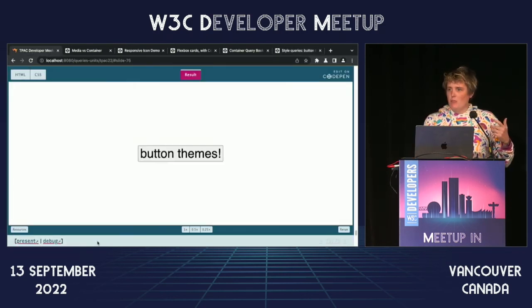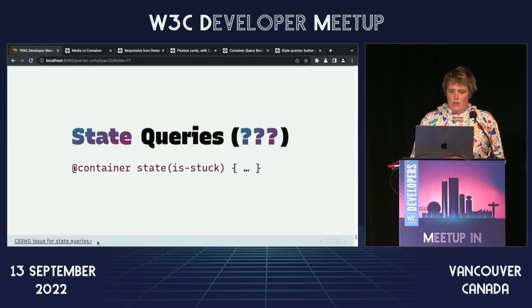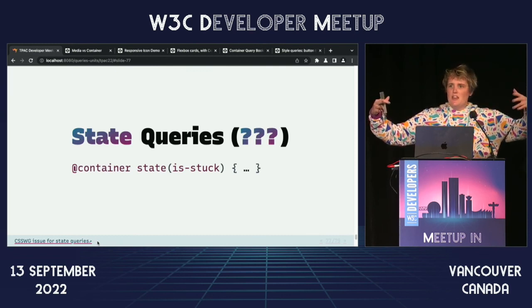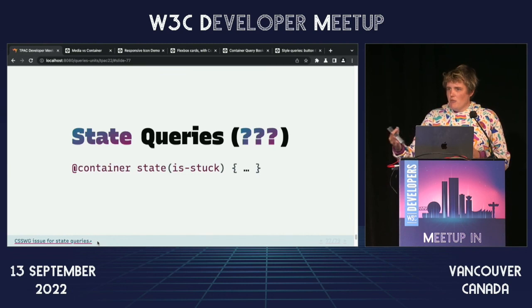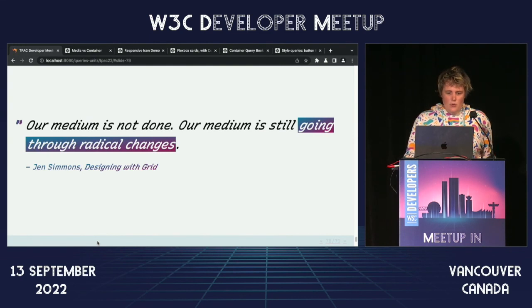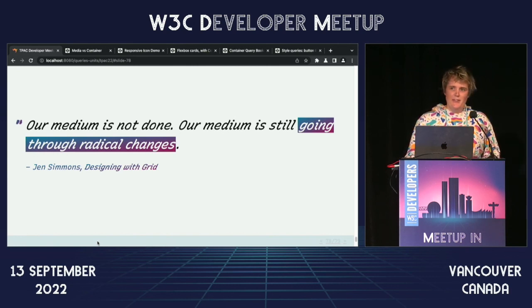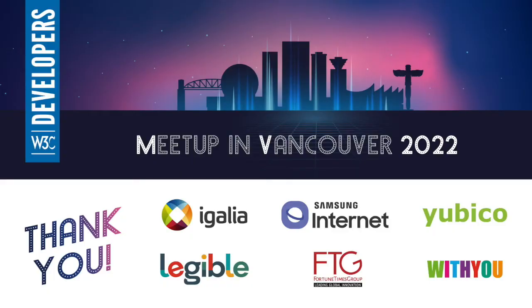We would love to see more use cases for style queries and get those shipped everywhere. We think there are probably other questions we can ask of containers — we're looking at state queries. Could we query whether a container is position sticky and currently stuck? We haven't specced it yet, but we think there might be more opportunities for asking questions of containers. If you have ideas, there's a link in the slides to the issue. Our medium is not done — our medium is still going through radical changes, and that's why we're all here. Thank you.